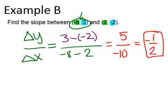Notice that this is a negative slope. That means the line will be going down from left to right, just like this.